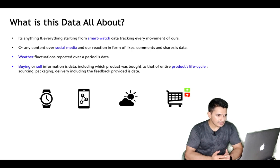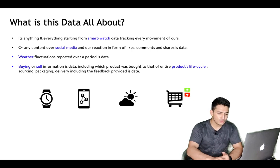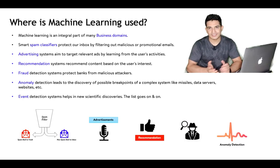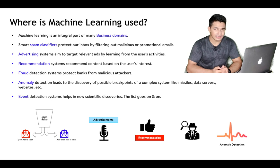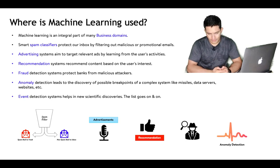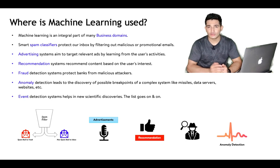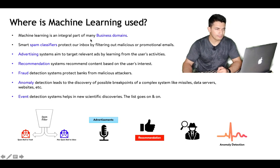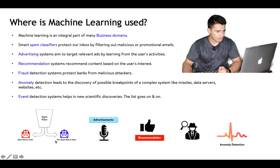Next, we will see where machine learning is used these days. With the previous slides, you would have already grasped the importance of data, but let's look at specific applications. According to me, machine learning is simply processing this data and driving information or knowledge out of it. Machine learning is an integral part of many business domains — it's used in smart spam classifiers to protect our inbox by filtering out malicious or promotional emails.